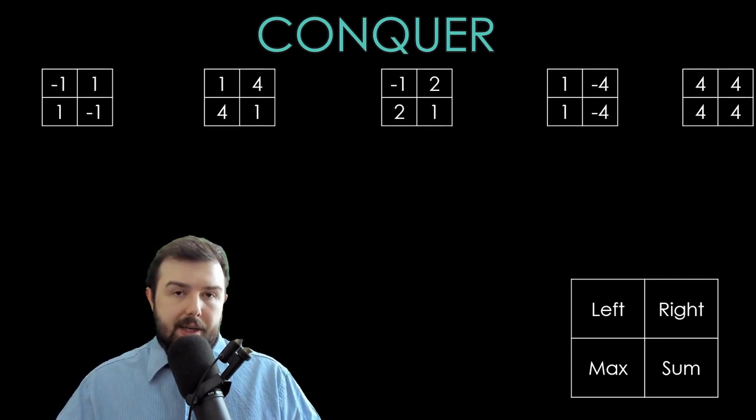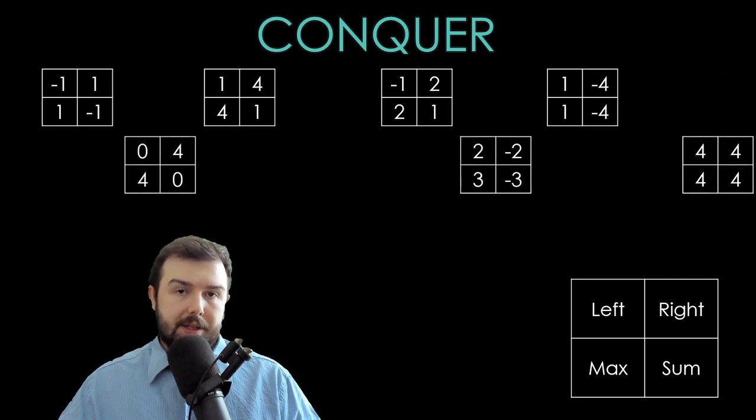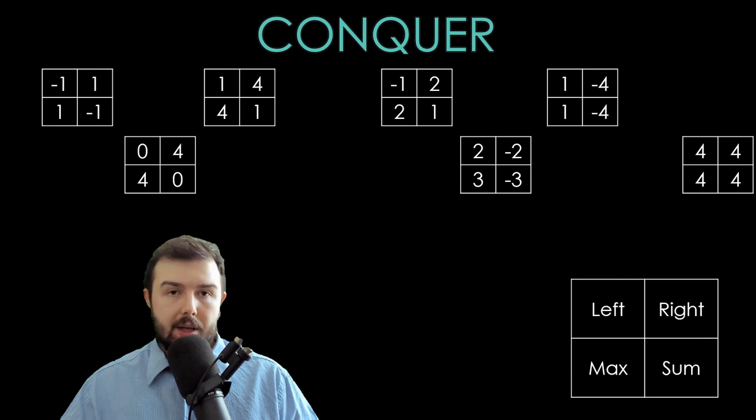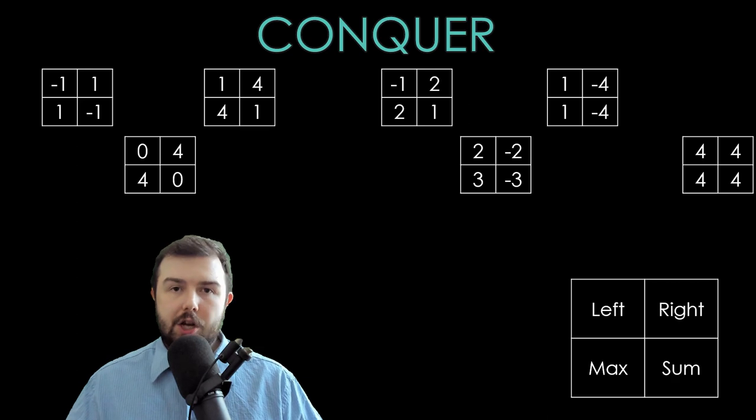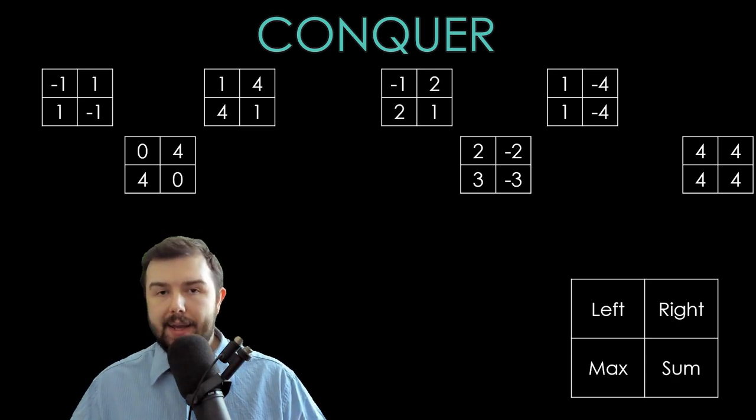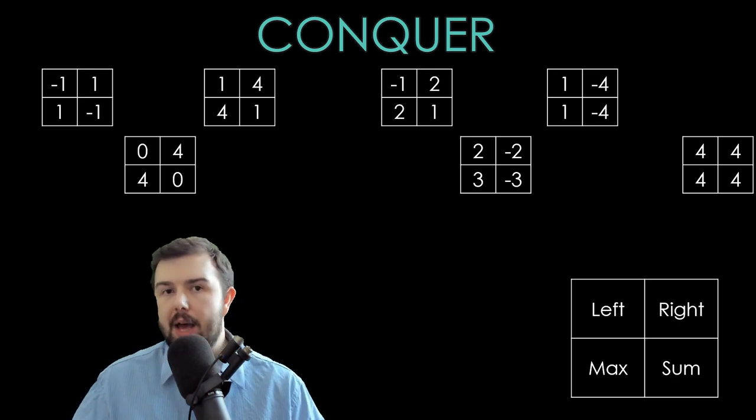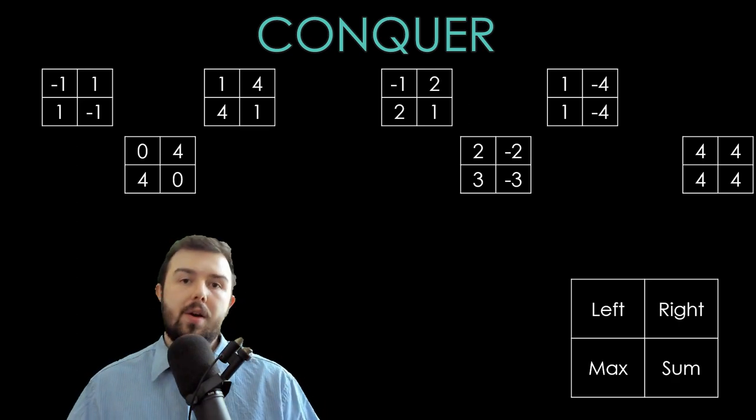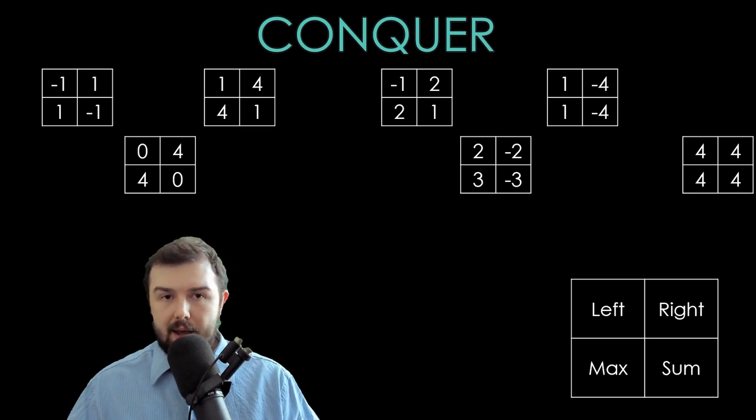And we are repeating this operation many times until we reach only one item. So how does it change anything with the previous approach? Why do we need to make it so complicated? How does it help Google or any other big company to calculate things faster than anyone else?